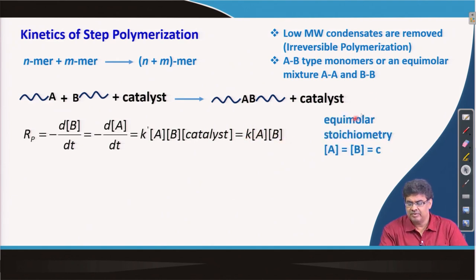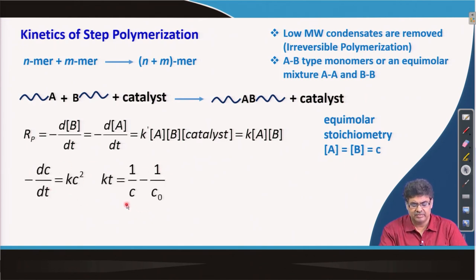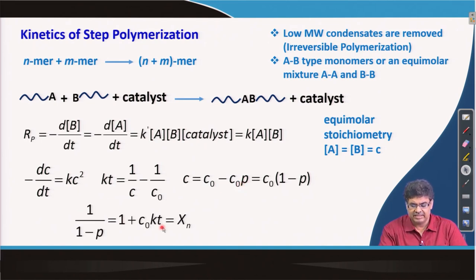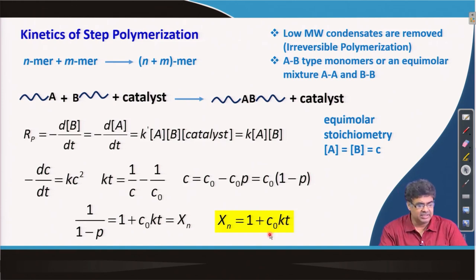Integrating this rate expression, where C₀ is the initial monomer concentration at t = 0, and rearranging in terms of p — the fraction of functional groups that have reacted at time t — we get the integrated expression. Eventually, the degree of polymerization X_n is given by: X_n = 1 + C₀k't, where C₀ is the initial monomer concentration.